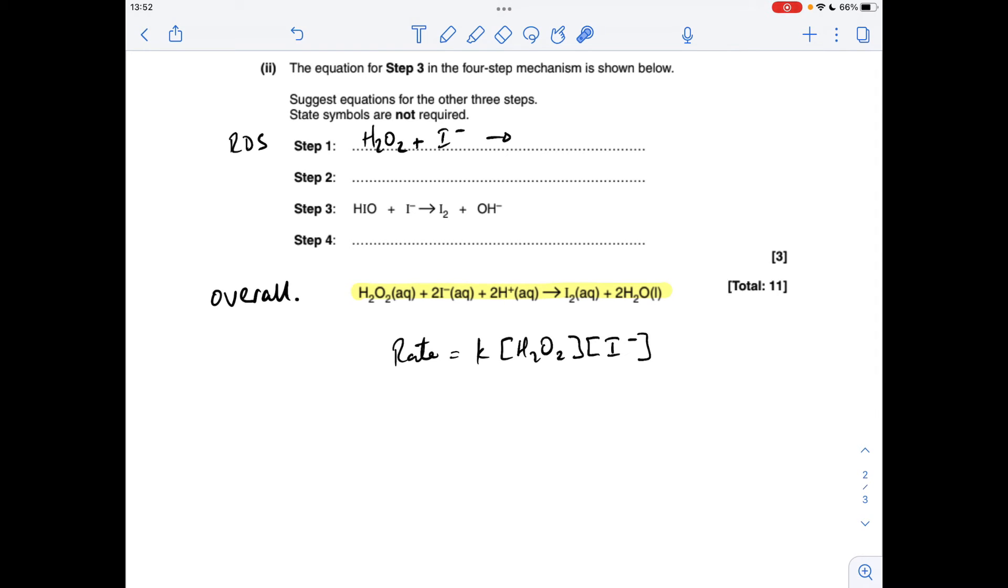Next thing I would do is look at the overall equation and see if I can make any of the products from what I've got in the rate determining step. I can't make the I2 because I've only got one I. I could make one of those H2Os. So we'll do that, and then we'll just lump the remaining atoms together, which gives us an IO- ion. The charges have to balance as well. Now you can see there isn't any IO- in the overall equation, so I need to get rid of that. So if we make that a reactant of step two.